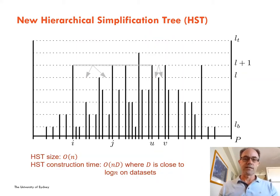The HST has linear size and is constructed in O(nD) time, where D is close to log n on tested datasets. The HST size is small and construction time fast compared to other work that looks at the sub-trajectory range counting problem or compared to the baseline 3 algorithm.